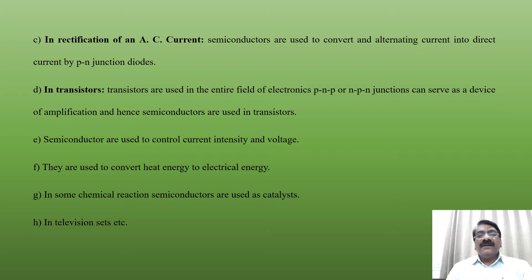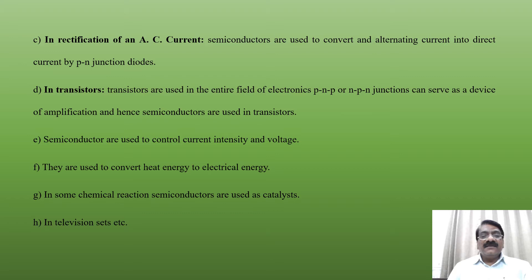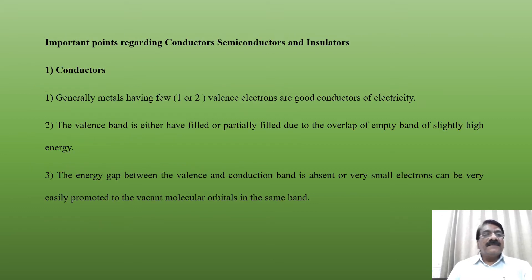Fourth, in transistors, semiconductors are used in transistors. Transistors are used in the entire field of electronics. PNP or NPN junctions can serve as devices of amplification. Next, semiconductors are used to control current intensity and voltage, to convert heat energy to electrical energy, as catalysts in some chemical reactions, and in television sets.